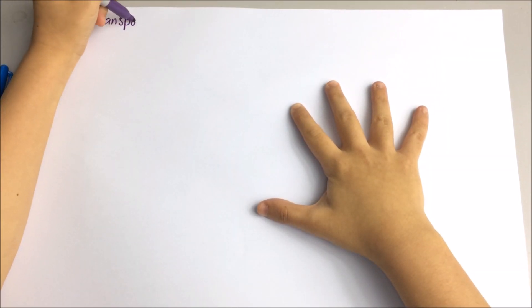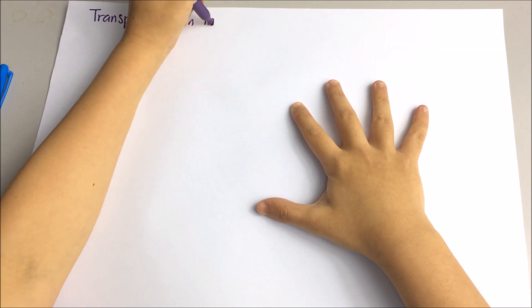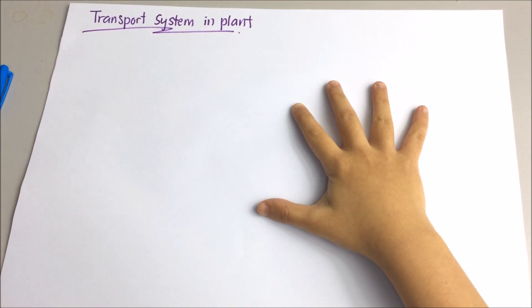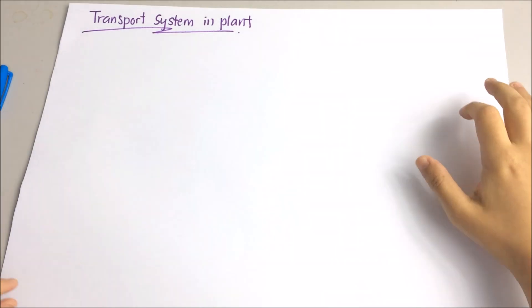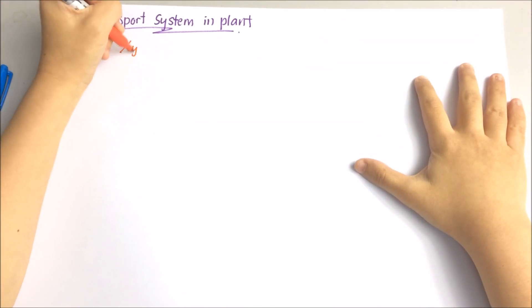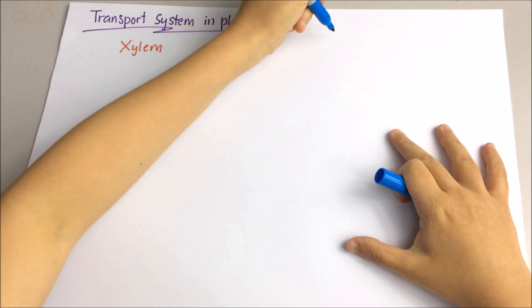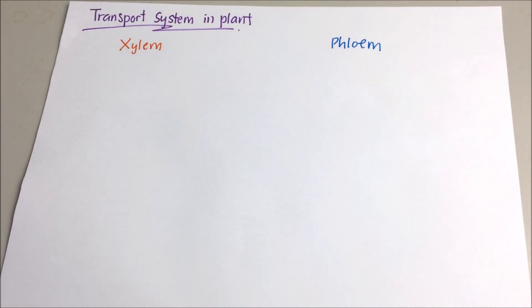Hi guys, welcome to today's video where we're talking about the transport system in plants. Unlike humans, plants do not have a heart, no blood, and no circulation, but they do still need a transport system to move food, water, and minerals around. They have two different types of transport tissues: first xylem, secondly phloem.